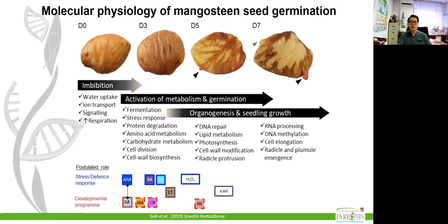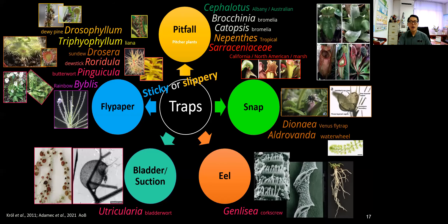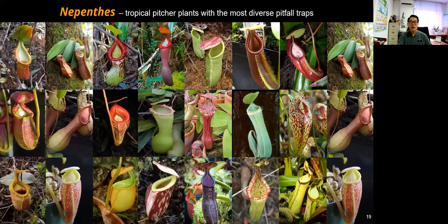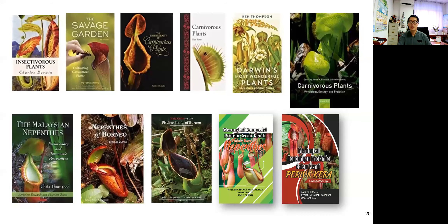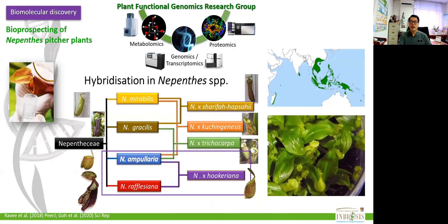This will be helpful to improve the propagation and post-harvest management of mangosteen in the future. We are also interested in plant carnivory. We profile all the proteins present in the pitcher fluid of Nepenthes, the tropical pitcher plant, a group of carnivorous plants with diverse species, through proteomic study to discover commercially useful enzymes.